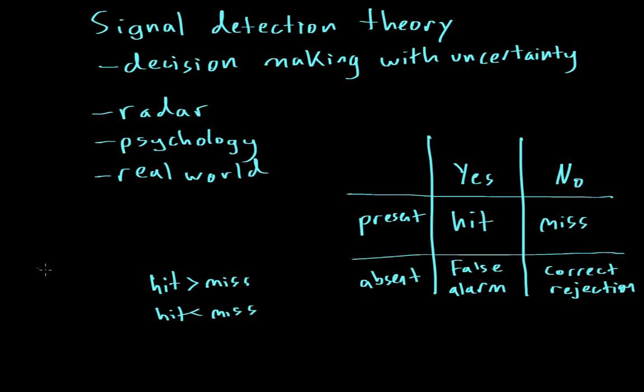The strength of a signal, which is what we were just talking about, is a variable known as d prime. This is the strength of a signal. And another variable is c, and that is strategy.